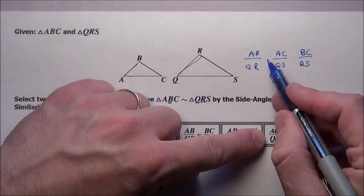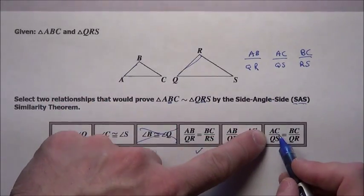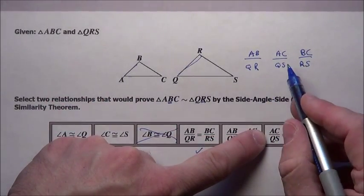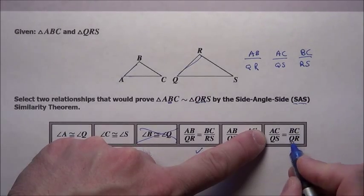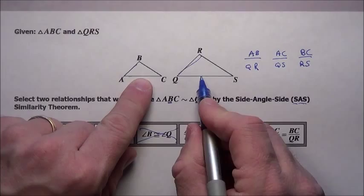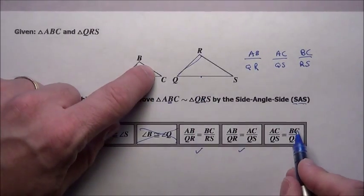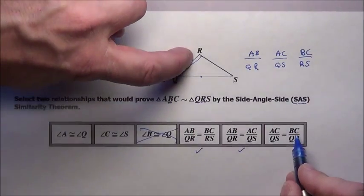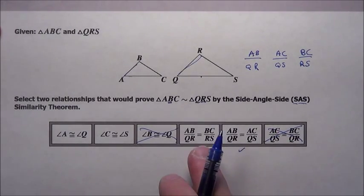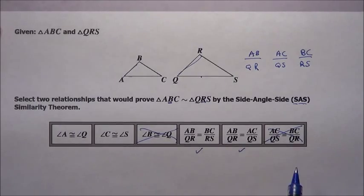And AC to QS corresponding to BC to QR. Well, that doesn't work. That's saying AC corresponding to QS will be the same as BC to that QR side. So I know that guy's out. So it's going to be a matching of one of these guys with one of these over here.